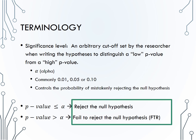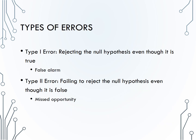Rejecting or failing to reject the null hypothesis are what we call decisions. These decisions are where an error would occur in the event of an unusual or non-representative sample. There are two types of errors in statistics. A type 1 error is when the decision is to reject the null hypothesis, even though the null hypothesis is true — your book terms a type 1 error a false alarm. A type 2 error is if we fail to reject the null hypothesis, even though the null is false, and your book calls this a missed opportunity.